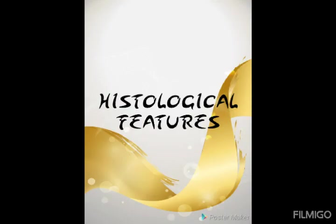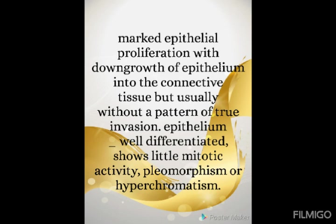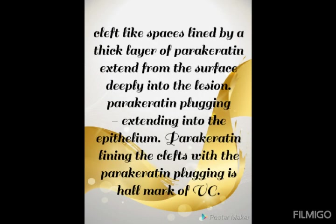The histological features may be extremely deceptive; many cases have originally been diagnosed as simple papilloma or benign epithelial hyperplasia due to the orderly appearance of the specimen. There is marked epithelial proliferation with downgrowth into the connective tissue but usually without true invasion. The epithelium is well differentiated with little mitotic activity; pleomorphism or hyperchromatism may be seen. Cleft-like spaces lined by a thick layer of parakeratin extend from the surface deeply into the lesion. The parakeratin lining the cleft with parakeratin plugging is the hallmark of verrucous carcinoma.